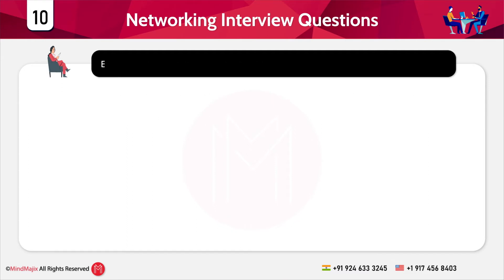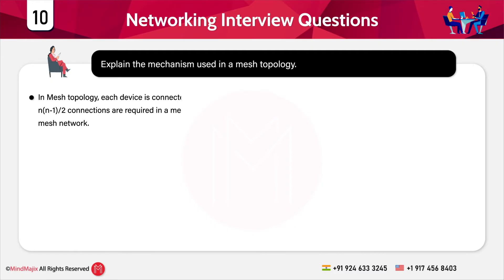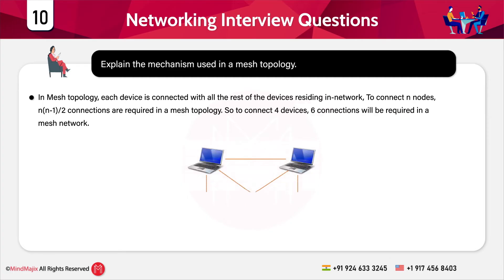The next question is: explain the mechanism used in a mesh topology. In mesh topology each device is connected with all of the rest of the devices in that network. To connect n nodes, n×(n−1)/2 connections are required. For example, to connect 4 devices, 6 connections are required — applying the formula: 4×(4−1)/2 = 6.